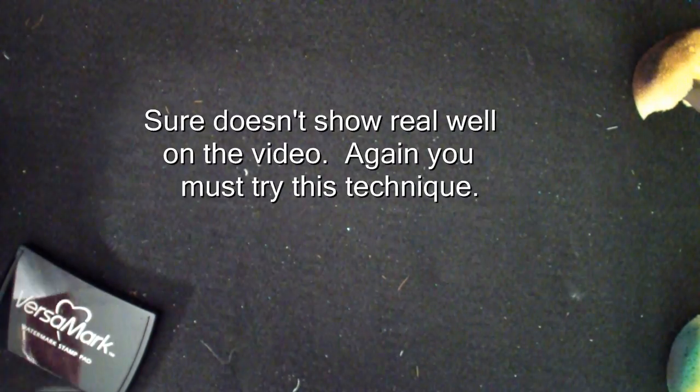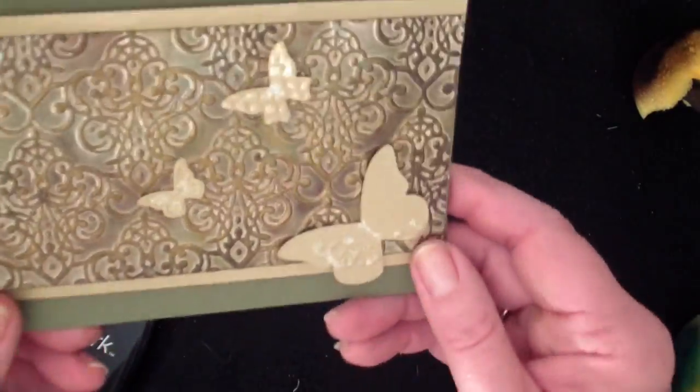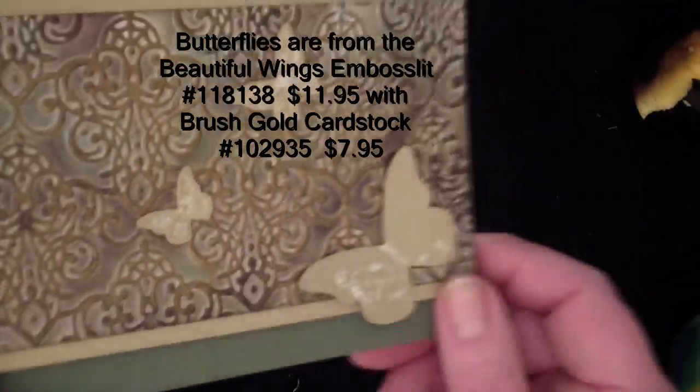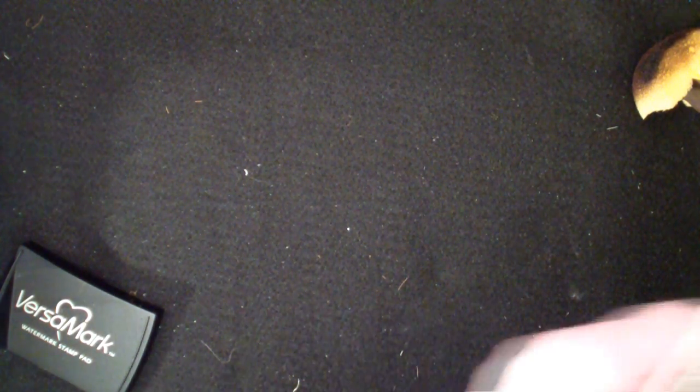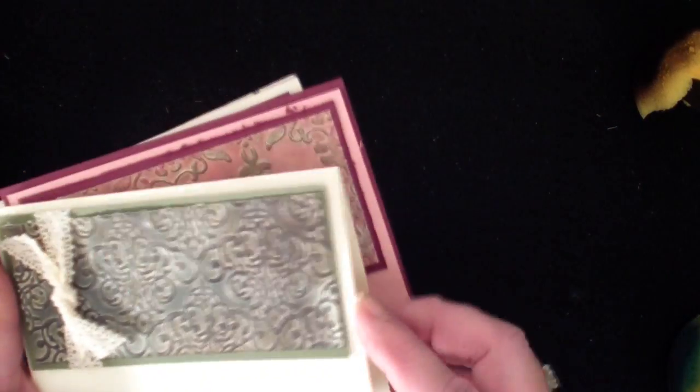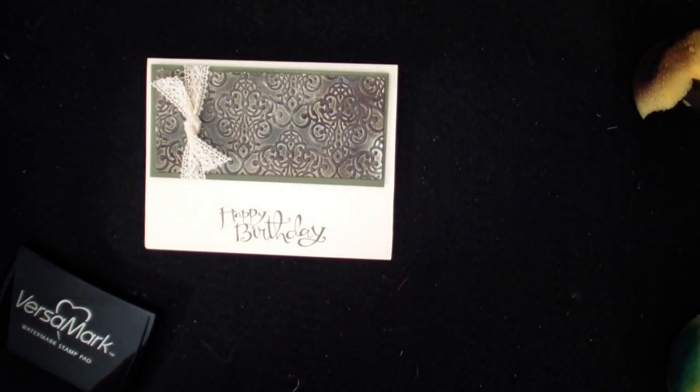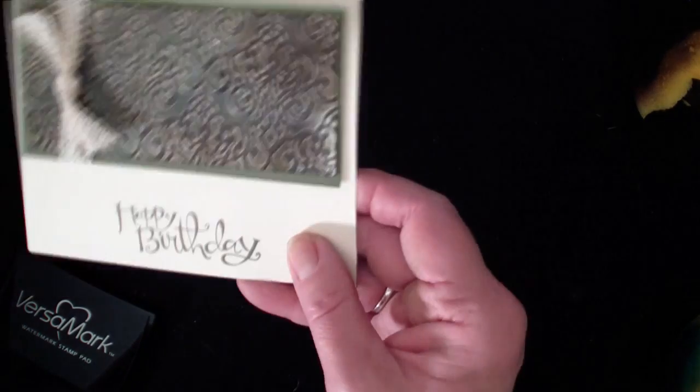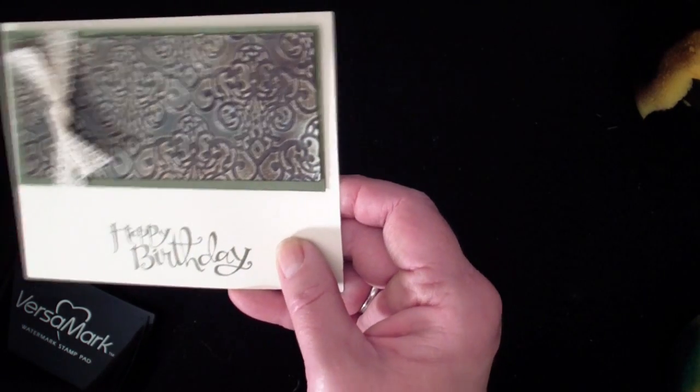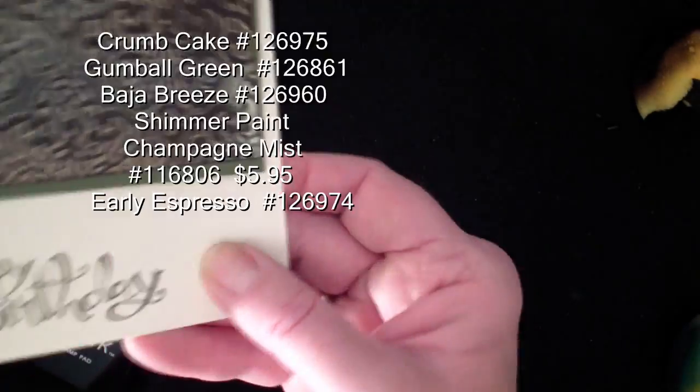Now I want to show you those cards again. This was the one that I used the same colors. The Old Olive, the Baja Breeze, and the Chocolate Chip. All of these cards I started out with my neutral color being the Crumb Cake. This card I used the Gumball Green. So I used Baja Breeze, Gumball Green, Espresso. And then I used Shimmer Paint on that. So it gives it a different look.